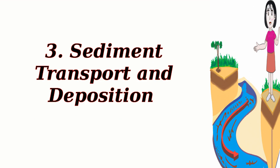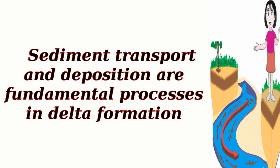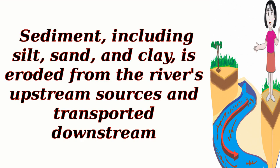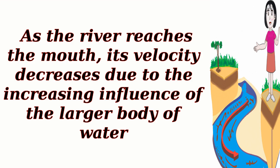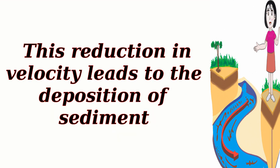3. Sediment transport and deposition. Sediment transport and deposition are fundamental processes in delta formation. Sediment, including silt, sand, and clay, is eroded from the river's upstream sources and transported downstream. As the river reaches the mouth, its velocity decreases due to the increasing influence of the larger body of water.